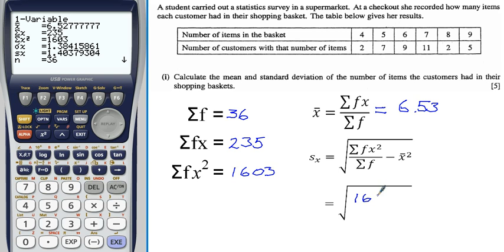So, 1603 divided by Σf, which is 36, minus the square of the mean, 6.53 squared.